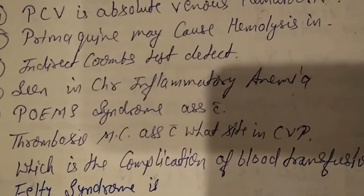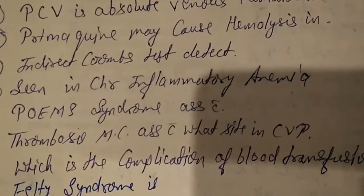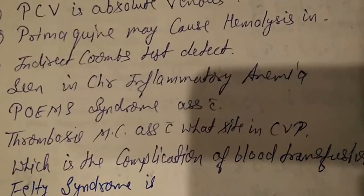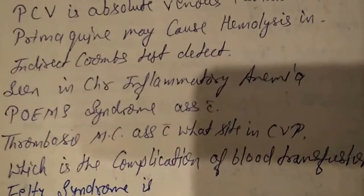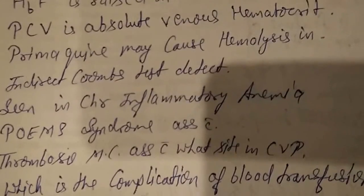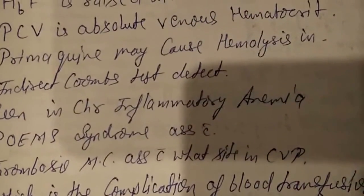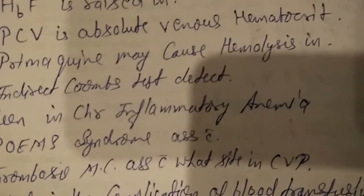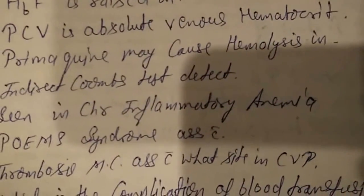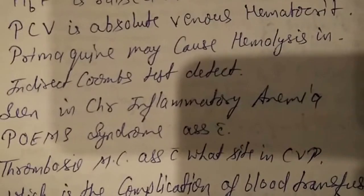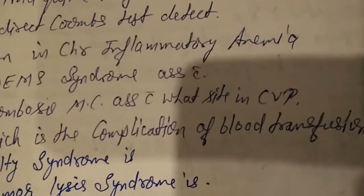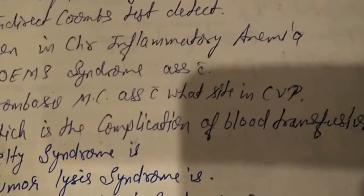The indirect Coombs test detects antibody in serum. Seventh question: what do we see in chronic inflammatory anemia? Serum iron decreases, serum transferrin decreases, but serum ferritin increases.